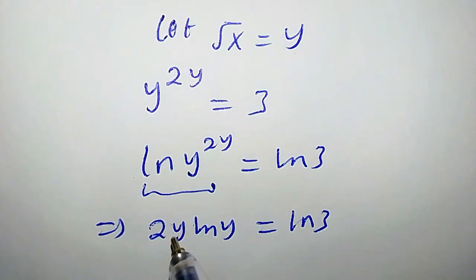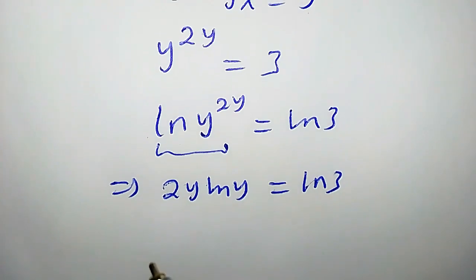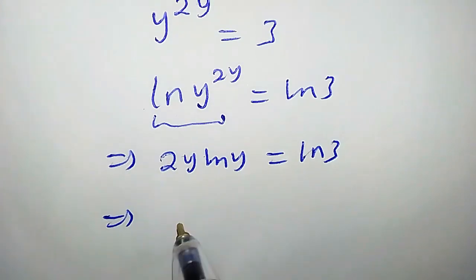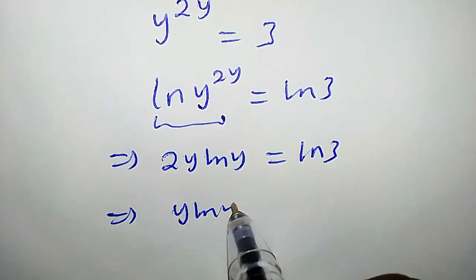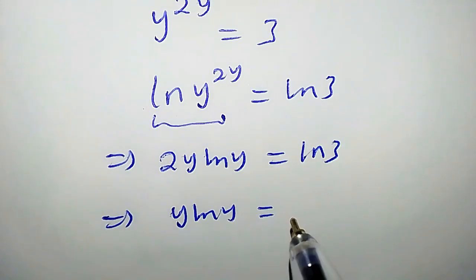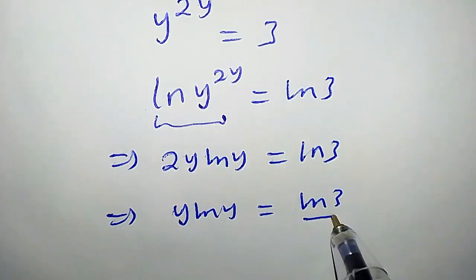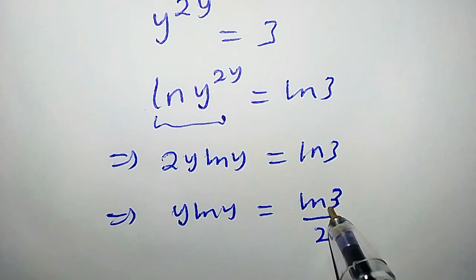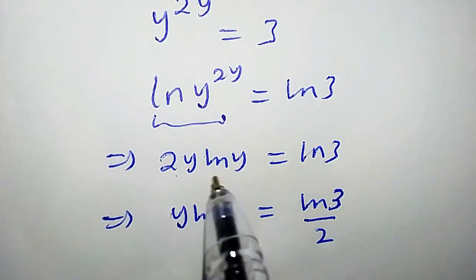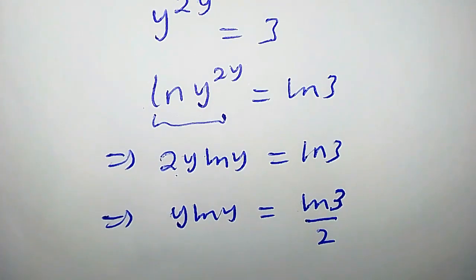This property comes from the rules of logarithm. Proceeding further, this implies that y·ln(y) equals ln(3)/2. That is, dividing both sides by 2, we get this.